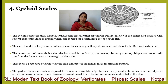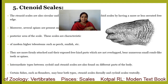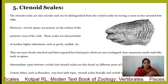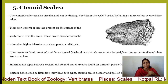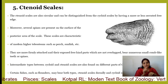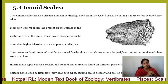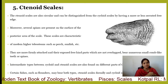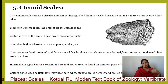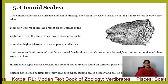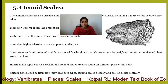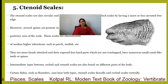The ctenoid scales are present in modern teleost fishes. Ctenoid scales are circular and can be distinguished from cycloid scales by having more or less serrated free edges — the serrated edges serve for protection. Moreover, several spines are present on the surface of the posterior area of the scales. These scales are characteristic of modern higher teleost fishes such as perches and sandfishes. They are more firmly attached at the exposed free end and are not overlapped there. Numerous small comb-like teeth or spines can be clearly seen.